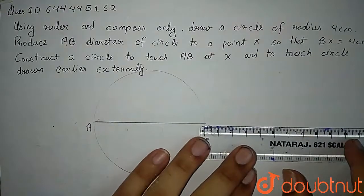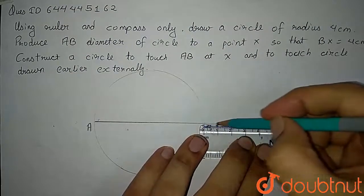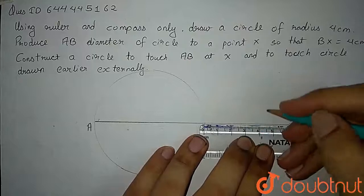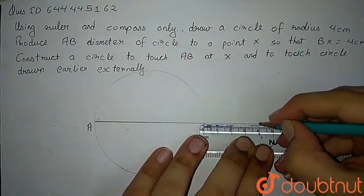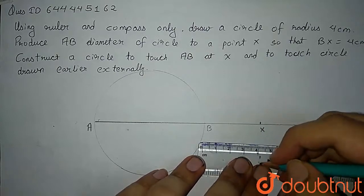So we have to produce AB. So I have produced this AB and I have to mark X at 4 cm. So let BX be 4 cm. So I have done this.